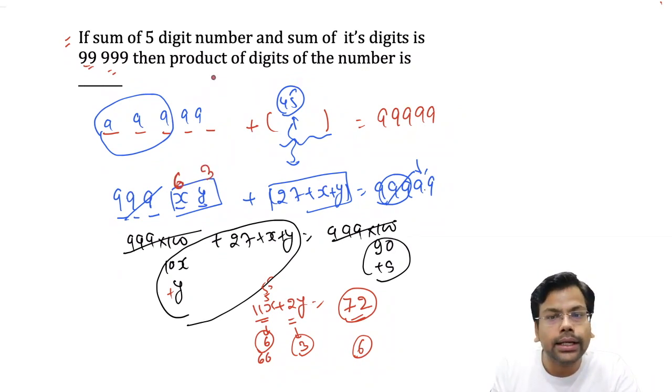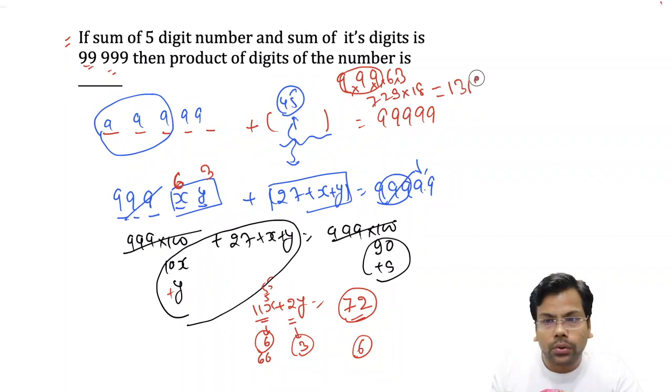Now we know what we need to do: product of numbers. Here the number is 99963. And product of number is 9 into 9 into 9 into 6 into 3. So this one is 729 into 18, which equals 13122. And this one is the answer of this question.